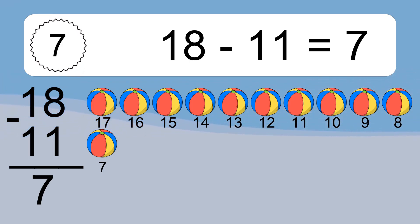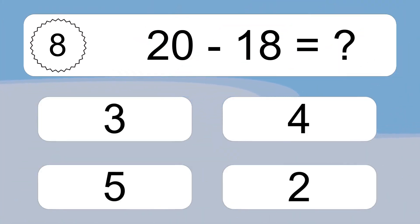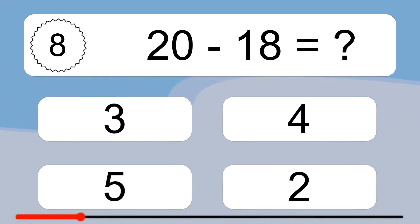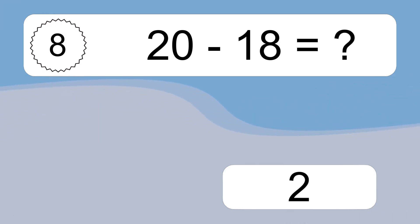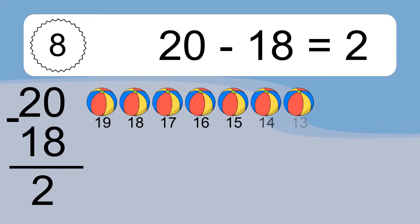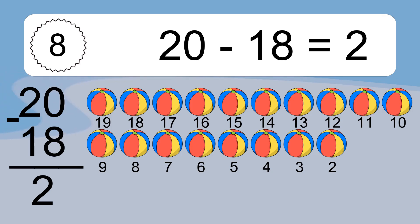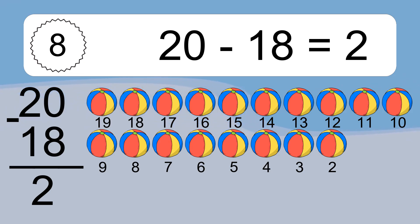20 minus 18 equals what? 20 minus 18 equals 2. Let's count it: 19, 18, 17, 16, 15, 14, 13, 12, 11, 10, 9, 8, 7, 6, 5, 4, 3, 2.